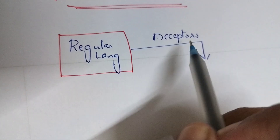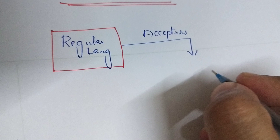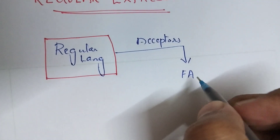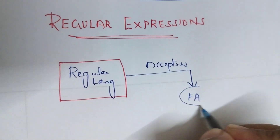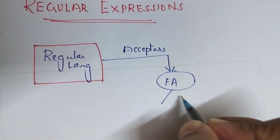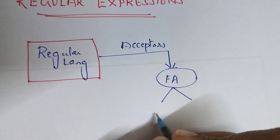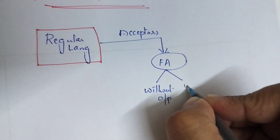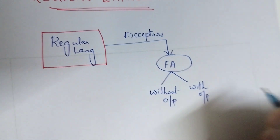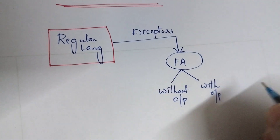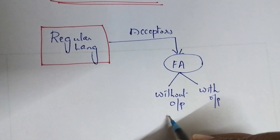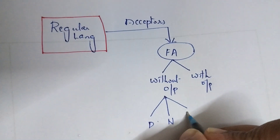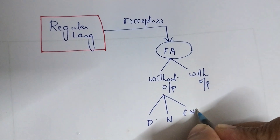Regular languages are accepted by acceptors, and acceptors are nothing but finite automata. In finite automata we saw two categories: finite automata without output, and finite automata with output. The without-output category has three types: DFA, NFA, and epsilon-NFA.